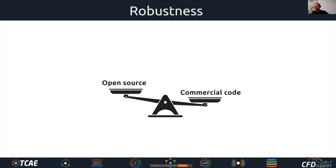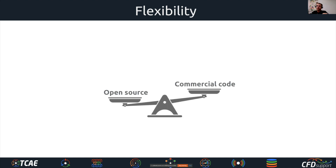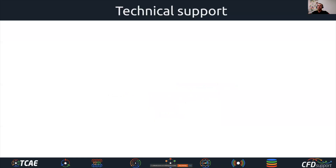Regarding flexibility — how much we can customize the code — open source is superior to commercial codes. The code is open, customization is possible, and in good hands it's possible to create nice new projects with expanded capabilities and features. Commercial codes, on the other hand, are very rigid — they either can or can't do something, and there's not much that can be done about it.